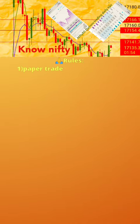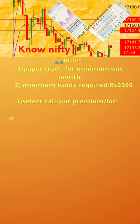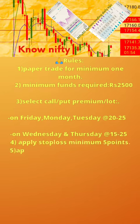Please follow the 7 rules below. 1. Paper trade for minimum one month. 2. Minimum funds required: Rs. 2500. 3. Select call or put premium per lot — on Friday, Monday, Tuesday at the rate of 20-25; on Wednesday and Thursday at the rate of 15-25. 4. Apply stop loss minimum 5 points.